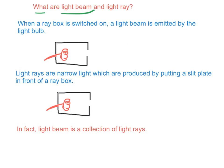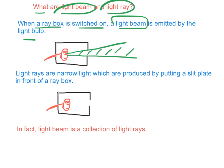What are light beams and light rays? When a ray box is switched on, a light beam is emitted by the light bulb. Light rays are narrow light, which are produced by putting a slit plate in front of the ray box.